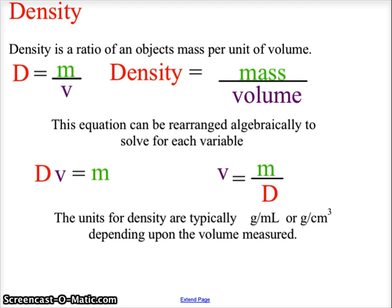Density is a comparison of mass over volume, so our formula is density equals mass divided by volume. This equation can be rearranged to density times volume equals mass, or volume equals mass divided by density. Based on the units used for volume, we can measure density as grams per milliliter or grams per centimeter cubed.